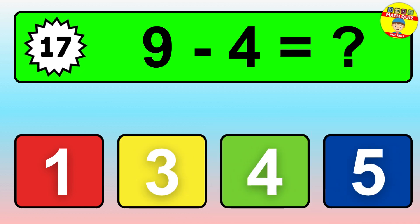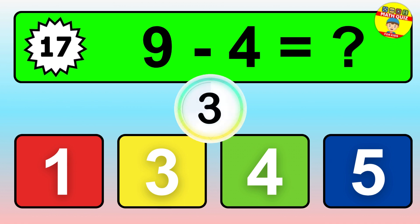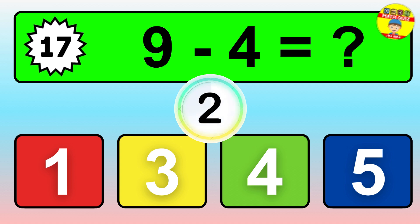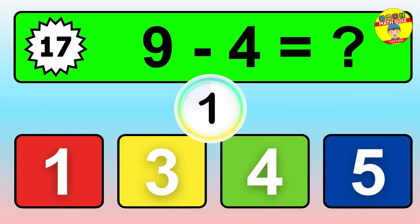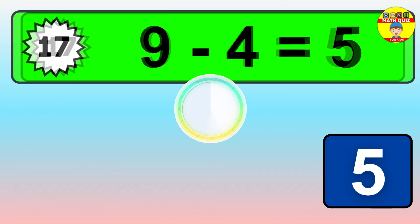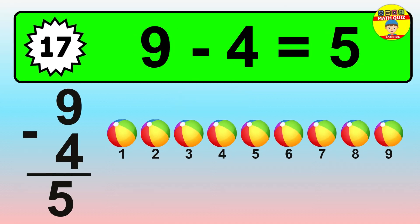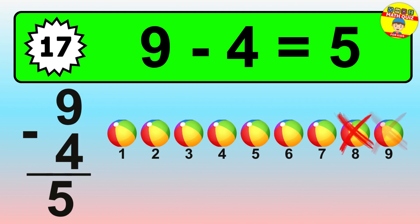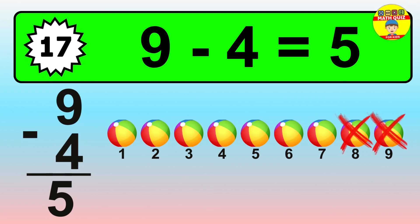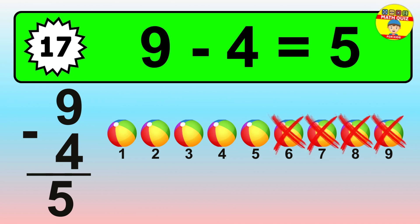Question seventeen: nine minus four equals what? So the answer is nine minus four is five. Let's count it: one, two, three, four, five.